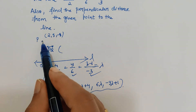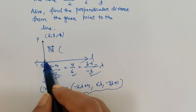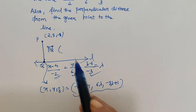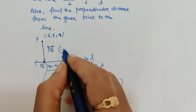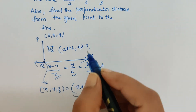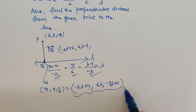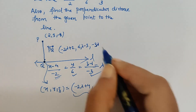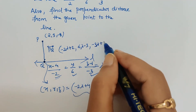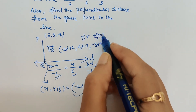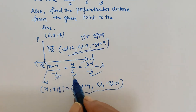When two points are given, the direction ratio of line PQ is their difference. So the direction ratio of PQ is: (-2λ + 4 - 2, 6λ - 3, -3λ + 1 + 8), which simplifies to (-2λ + 2, 6λ - 3, -3λ + 9). The direction ratio of line L is (-2, 6, -3).